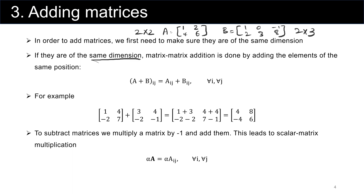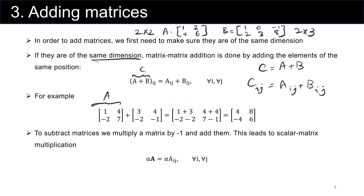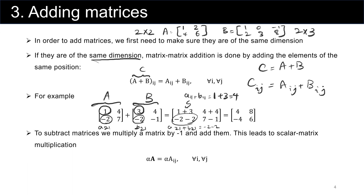If they are the same dimension, matrix addition is done by adding the corresponding elements of the same position. So let's call this C. C is equal to A plus B. The i-th row and j-th column of C is determined by summing the corresponding element from A and the corresponding element from B, for all i and j. For example, this element is A11 plus B11. A11 is equal to 1, B11 is equal to 3, so it's 4. This element is A21 plus B21, which is minus 2, minus 2, and so on. So this is how we can add two matrices.